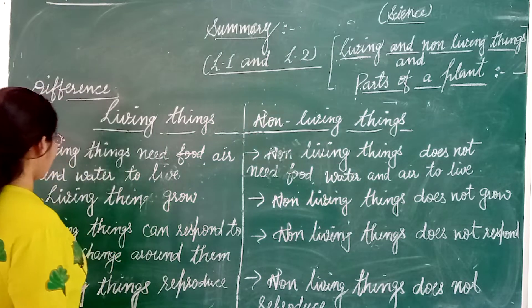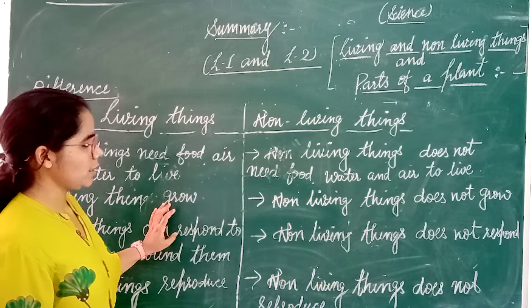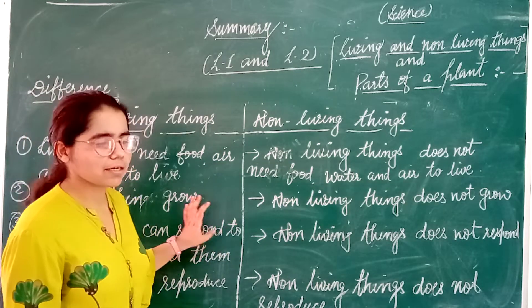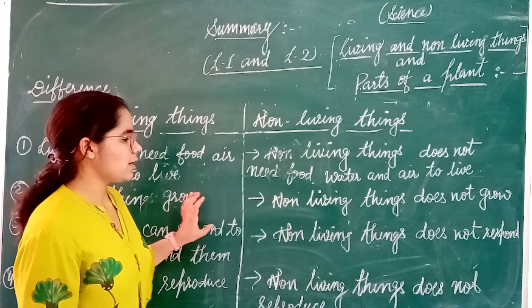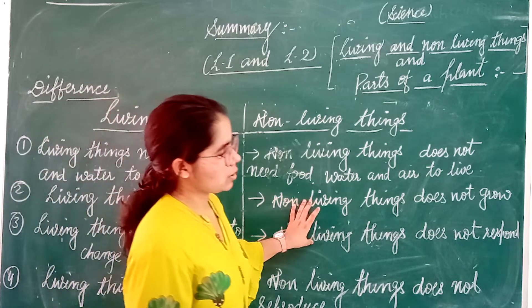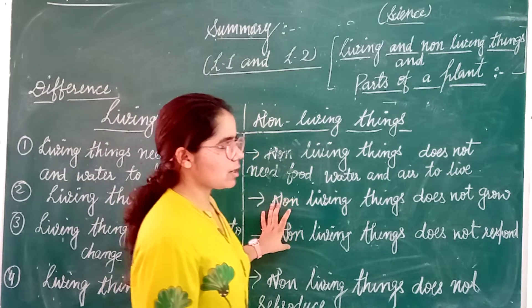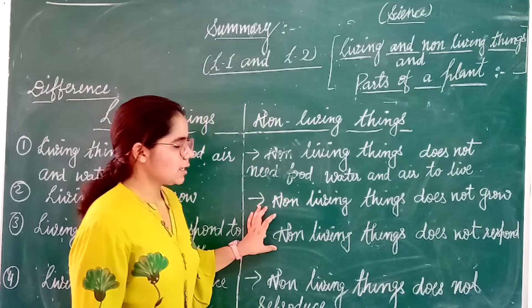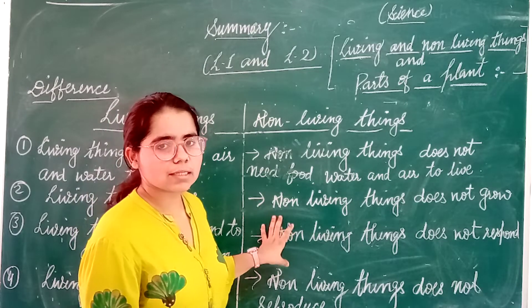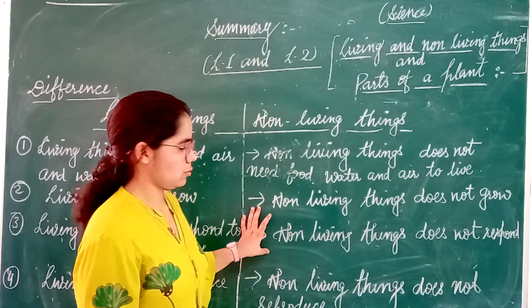Second difference: living things grow. It means living things' height and weight increase. Non-living things do not grow — their height and weight are constant; they do not grow.